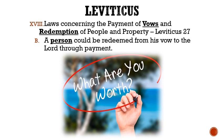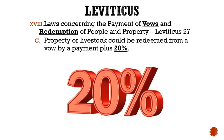Letter B: A person could be redeemed from his vow to the Lord through payment. If a person wanted to redeem an individual indebted to the Lord, then they could just pay that price that they were worth, which is outlined in this chapter. Letter C: Property or livestock could be redeemed from a vow by a payment plus 20%. If a person wanted to redeem property or livestock that was given as a vow to the Lord, then the payment was 20% more than previously mentioned.